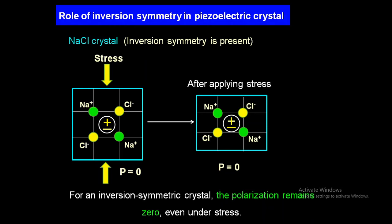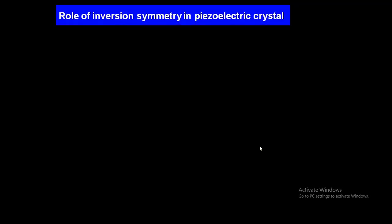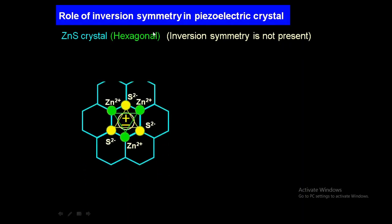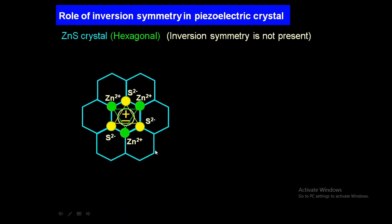Now we will consider an example of a crystal that does not exhibit inversion symmetry. Consider the ZnS crystal — the structure of ZnS is hexagonal. This is the two-dimensional picture of a ZnS crystal with a hexagonal unit cell. In the centered hexagonal unit cell, Zn²⁺ and sulfide ions are present at the corners — the green circles are Zn²⁺ ions and the yellow circles are S²⁻ ions. When we do not apply any stress, the centers of the positive and negative charges coincide.